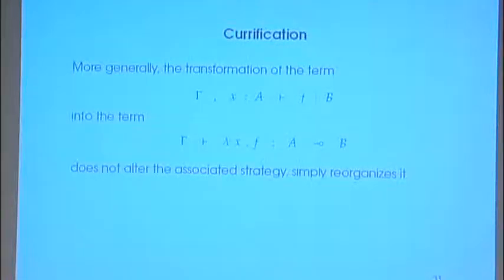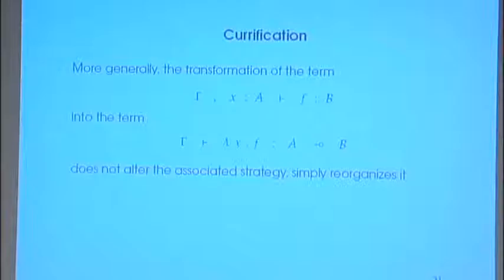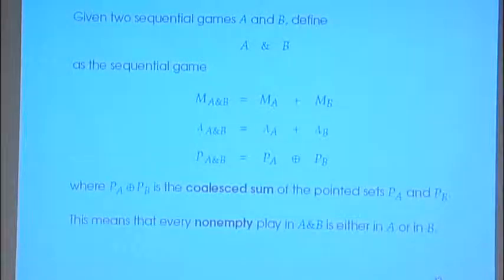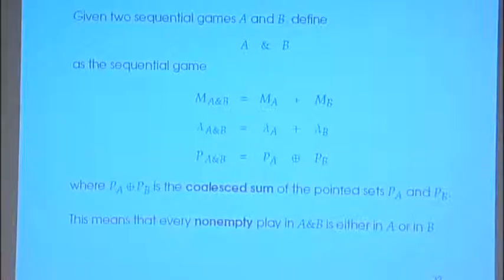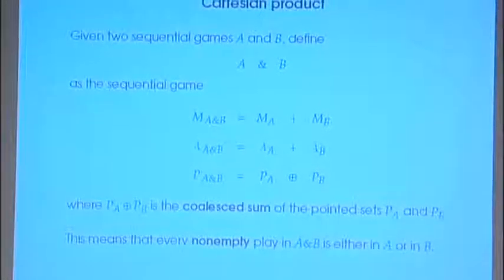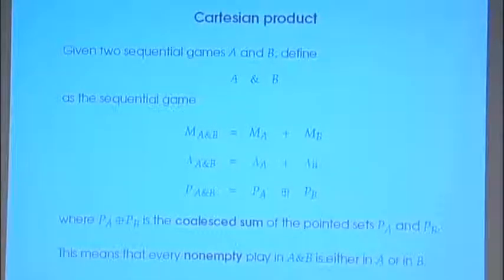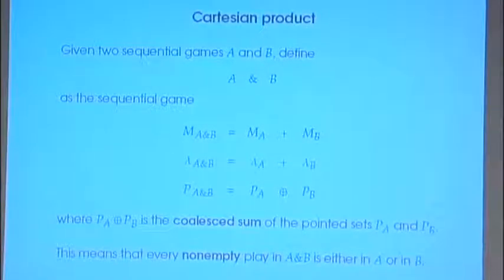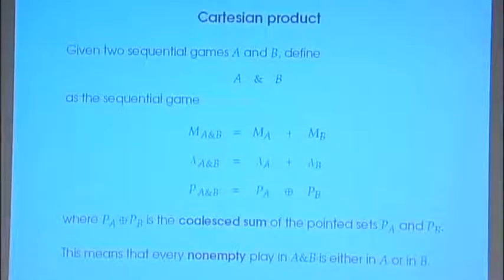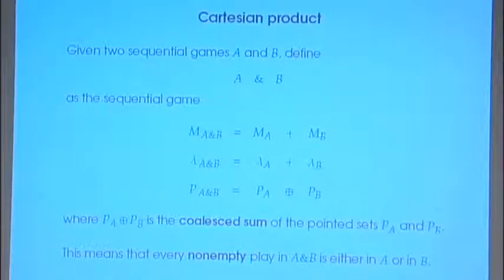To some extent, this shows that clarification is trivial. With these games already, because we have a tensor product and we have this implication, we can interpret all the linear lambda terms — lambda terms where every variable appears exactly once.